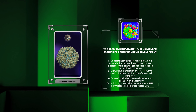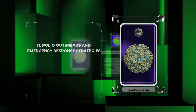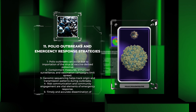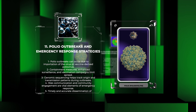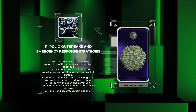We will now explore polio outbreaks and emergency response strategies. Polio outbreaks, although rare in countries with robust vaccination programs, can occur due to importation of the virus or vaccine-derived poliovirus, VDPV. Containment measures such as enhanced surveillance, mass vaccination campaigns, and targeted vaccination in high-risk areas play a crucial role in limiting spread. Rapid mobilization of healthcare resources including healthcare workers, laboratory facilities, and vaccine supplies is essential. Genomic sequencing of poliovirus isolates helps track the origin and transmission patterns of the virus, enabling authorities to implement targeted interventions focused on controlling transmission within affected communities.